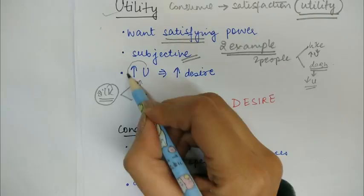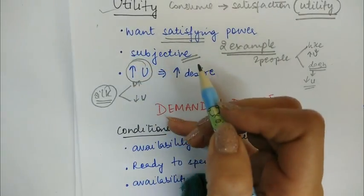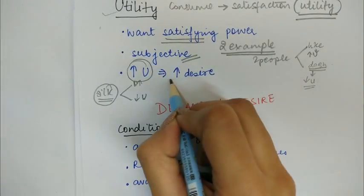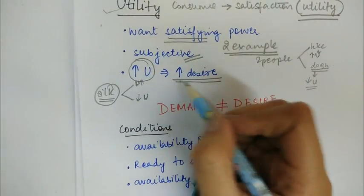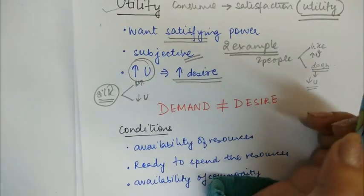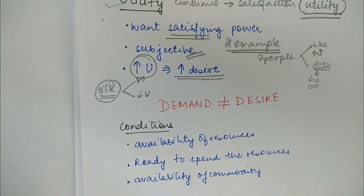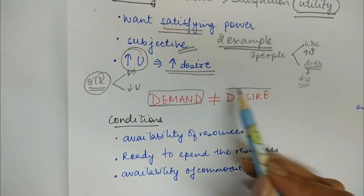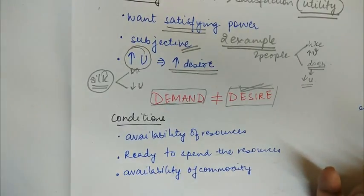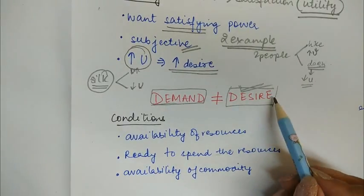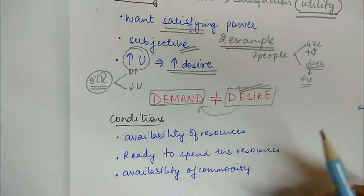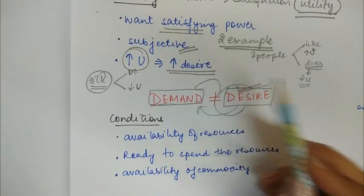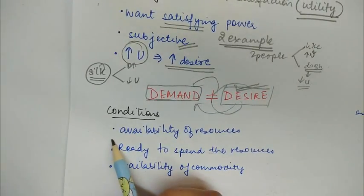When the utility you derive from a commodity is high, you will have the desire to have it. However, demand for a commodity is not equal to the desire for it. Just because you want or desire a commodity does not turn it into demand. Certain conditions need to be fulfilled to convert desire into demand.